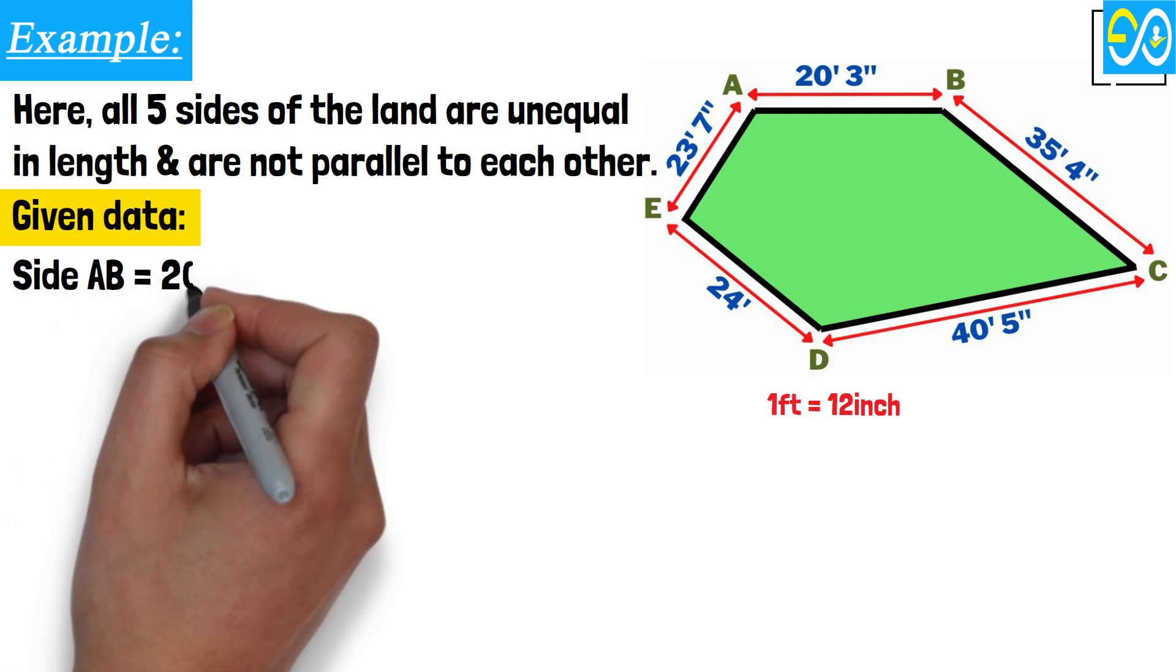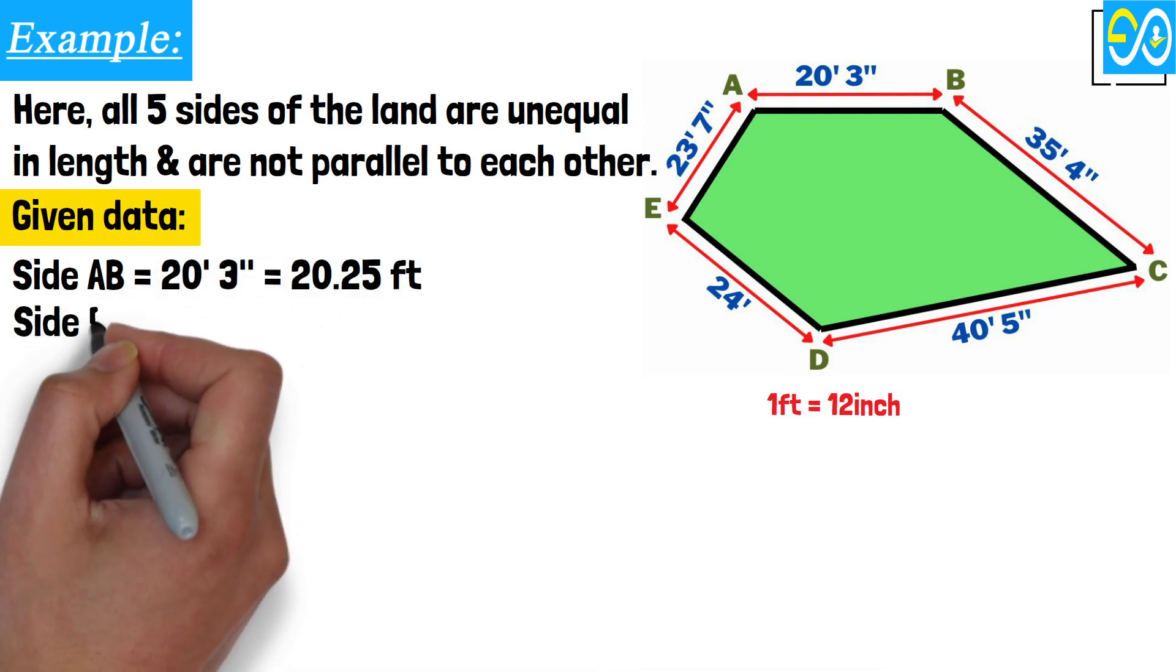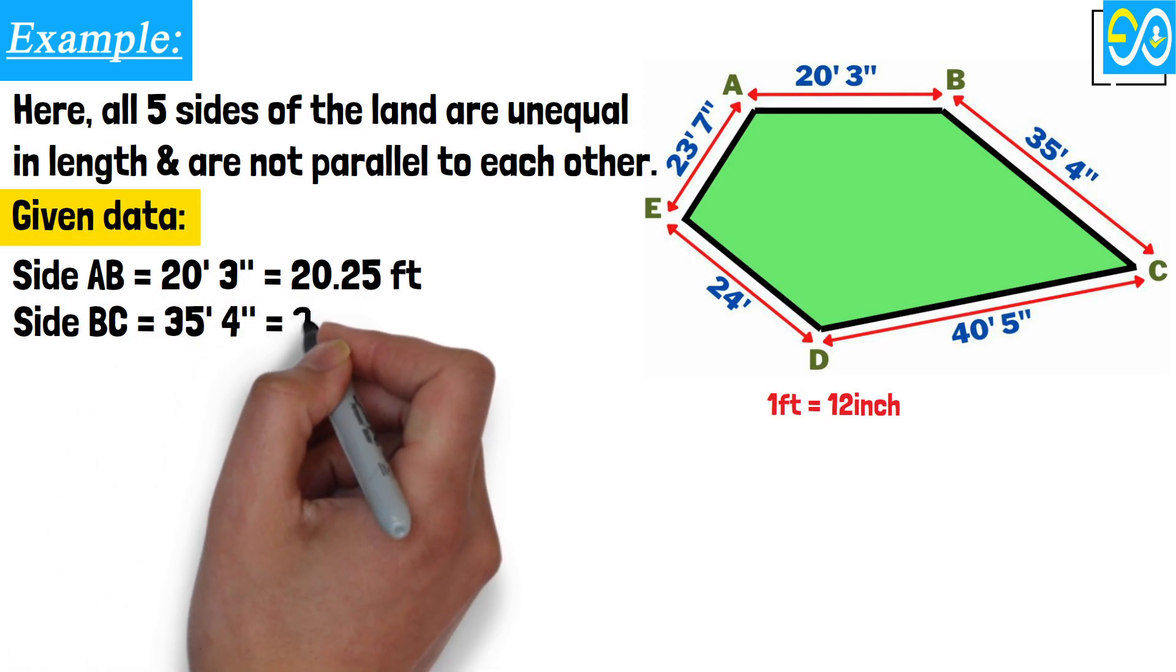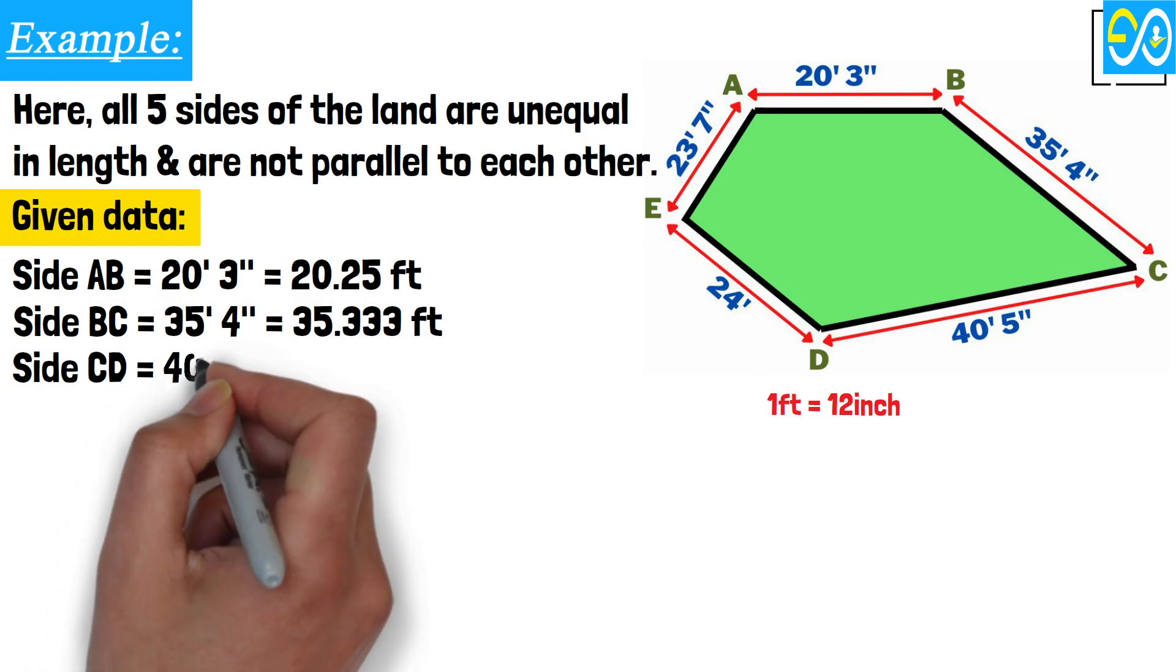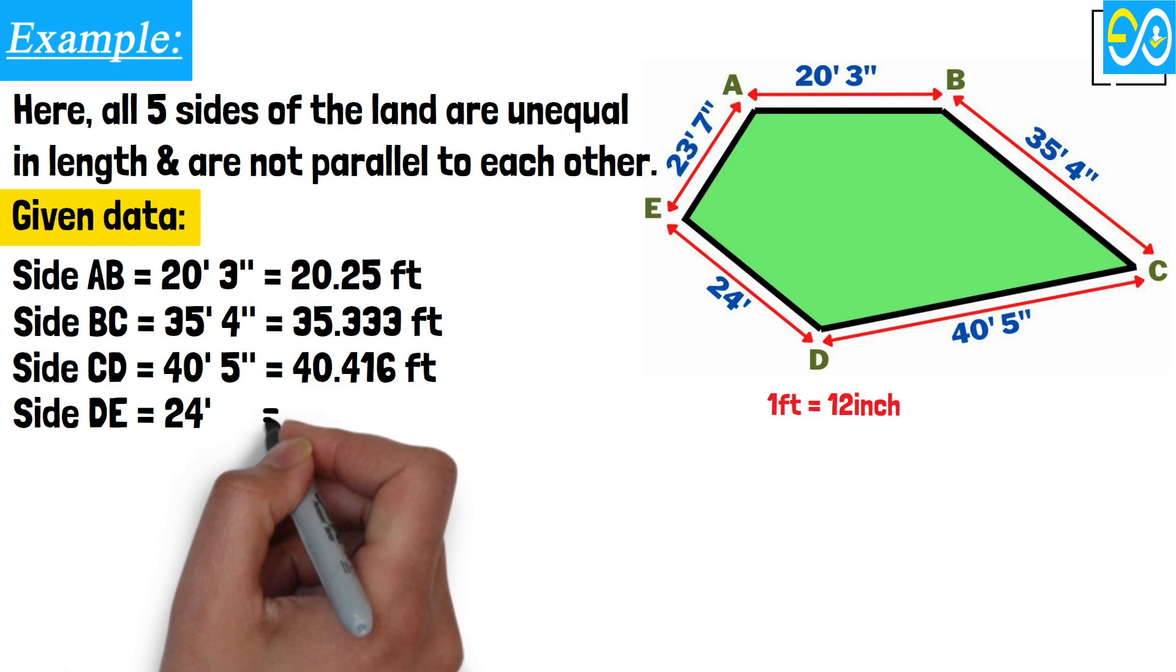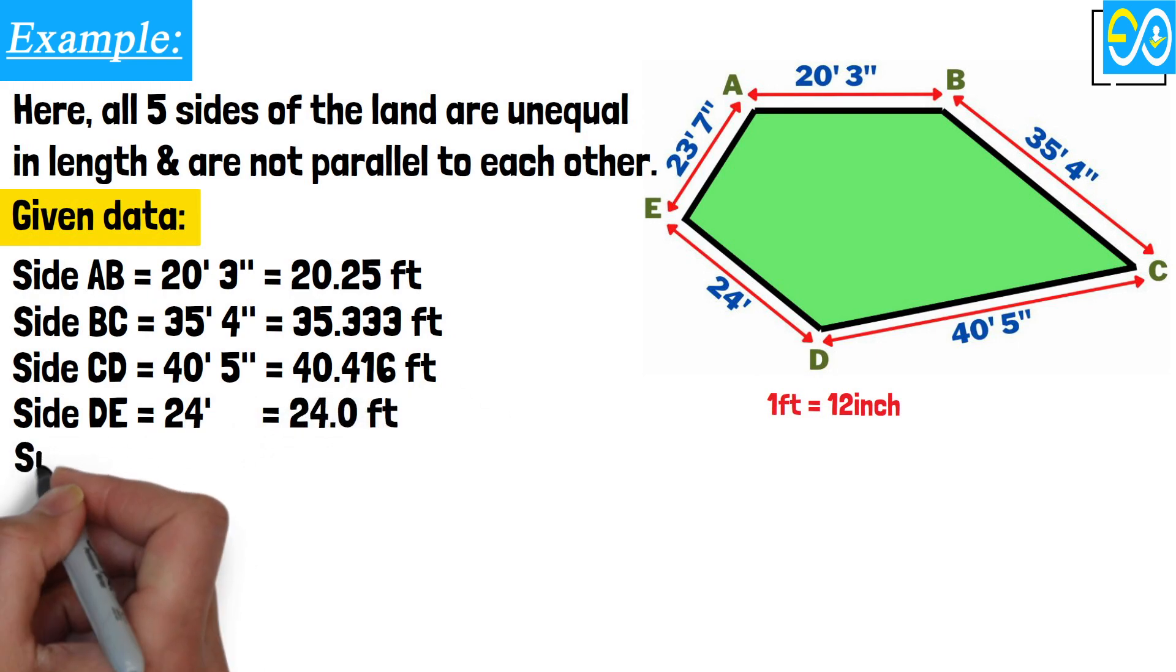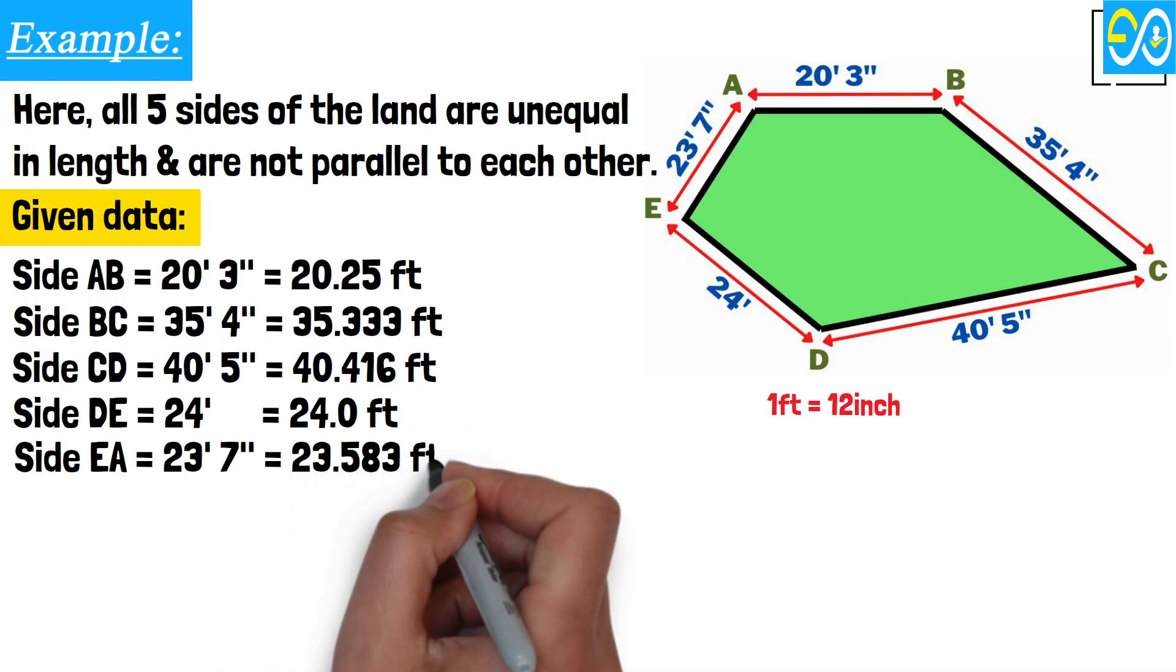Side AB equals 20 feet 3 inches equals 20.25 feet. Side BC equals 35 feet 4 inches equals 35.333 feet. Side CD equals 40 feet 5 inches equals 40.416 feet. Side DE equals 24 feet equals 24.0 feet. Side EA equals 23 feet 7 inches equals 23.583 feet.